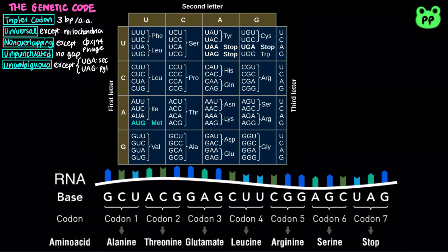The genetic code is degenerate. There are 20 amino acids encoded by 61 codons, which means that an amino acid may be specified by more than one codon.